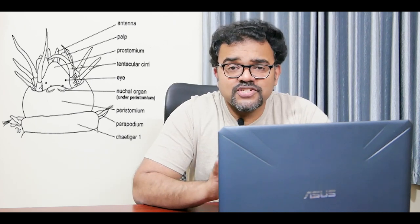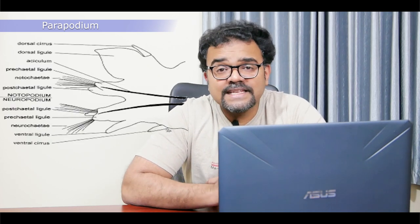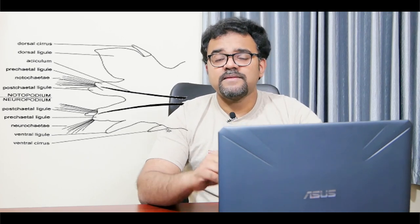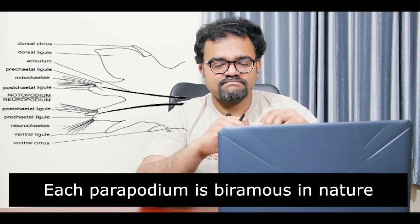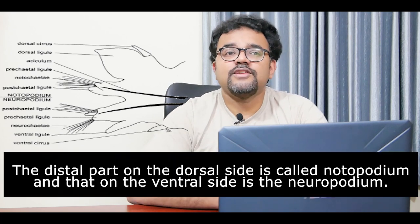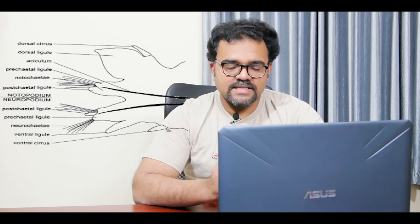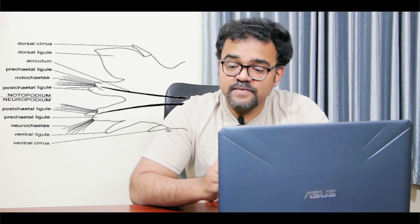Nereis has specialized appendages called parapodia. The trunk consists of a number of similar segments due to metamerism, and each segment carries a pair of appendages called parapodia on the lateral sides. The head and pygidium bear no parapodia. The parapodia are locomotory organs, and the largest parapodia are encountered in the middle segments of the body. Each parapodium is biramous, consisting of a basal part and two distal parts. The distal part on the dorsal side is called the notopodium and that on the ventral side is called the neuropodium.